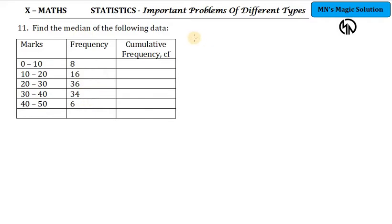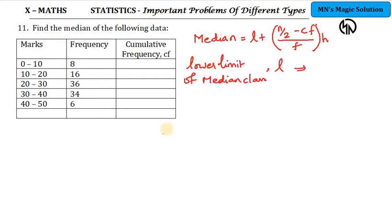So, median, there is a formula. The formula goes like this. L plus N by 2 minus cumulative frequency divided by frequency into H. L is unknown. L is lower limit of median class. This is N. N is total frequency.